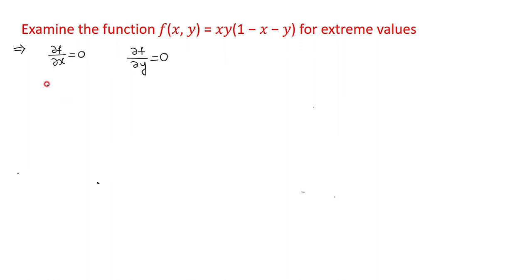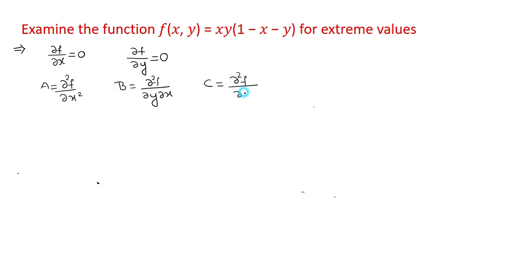The sufficient condition uses the second-order derivatives: A = ∂²f/∂x², B = ∂²f/∂y∂x (or ∂x∂y), and C = ∂²f/∂y². If ac - b² is greater than 0, the function will have extreme values. Depending on the sign of A, it will be either a maximum or minimum.